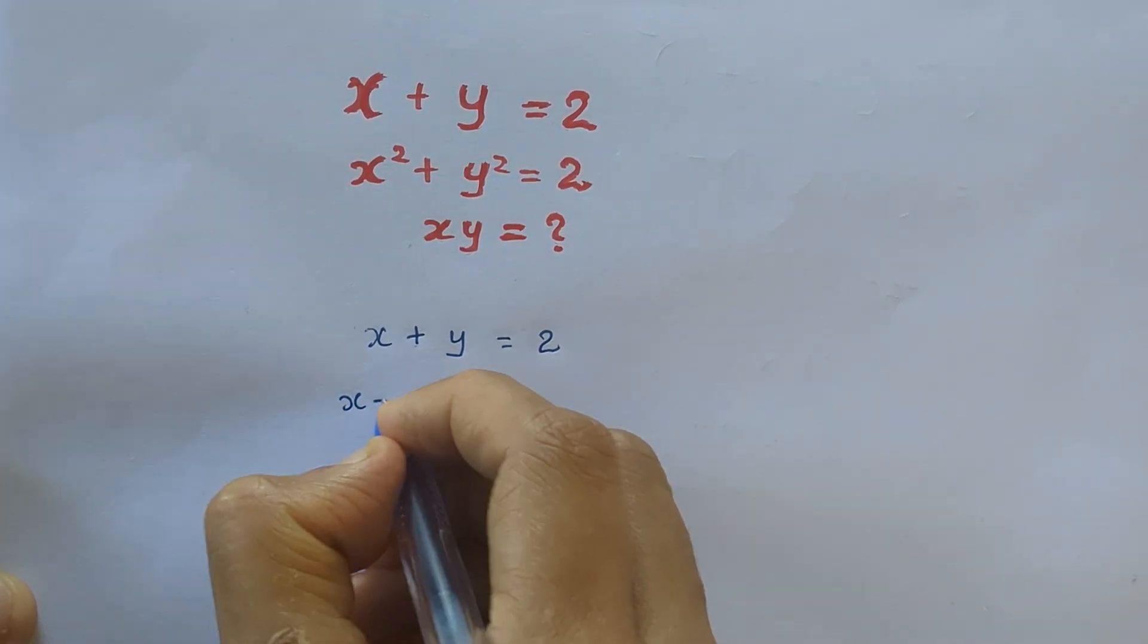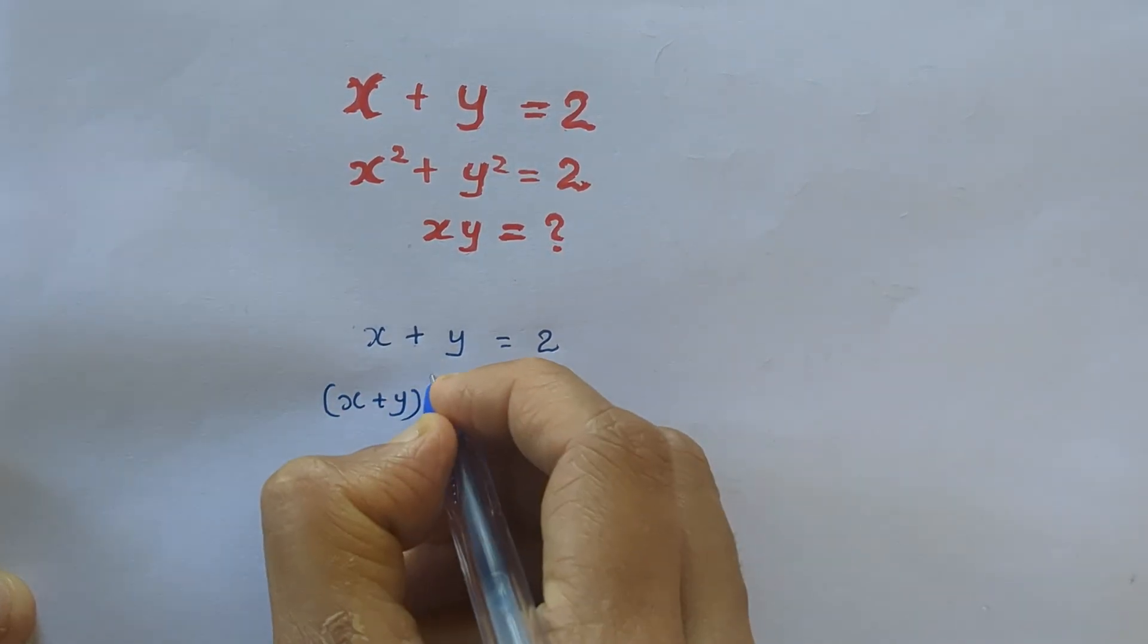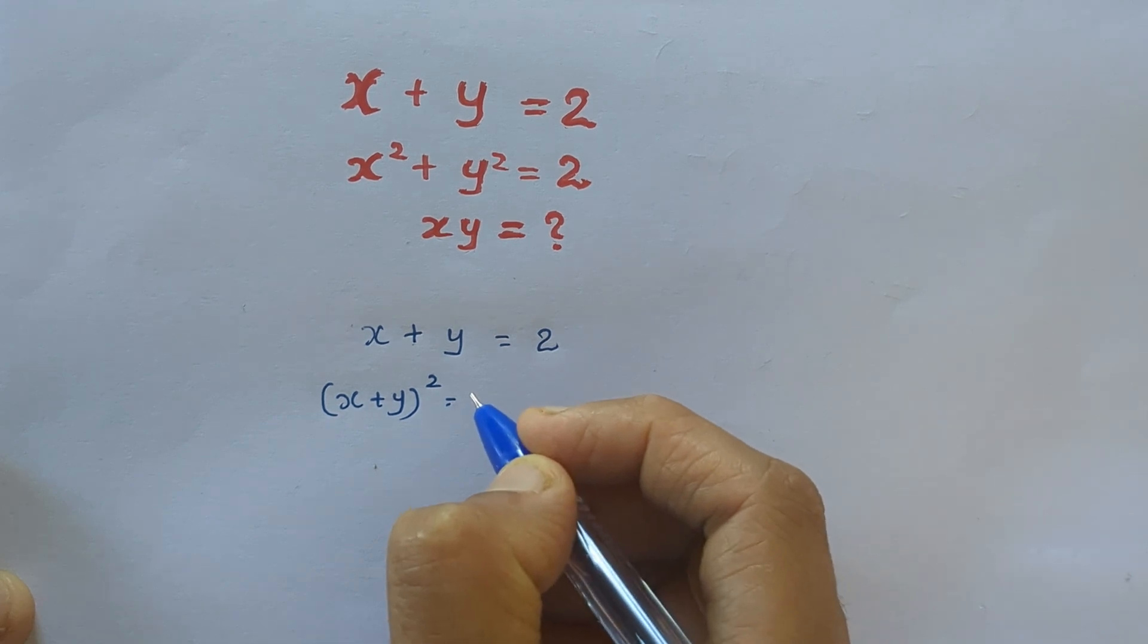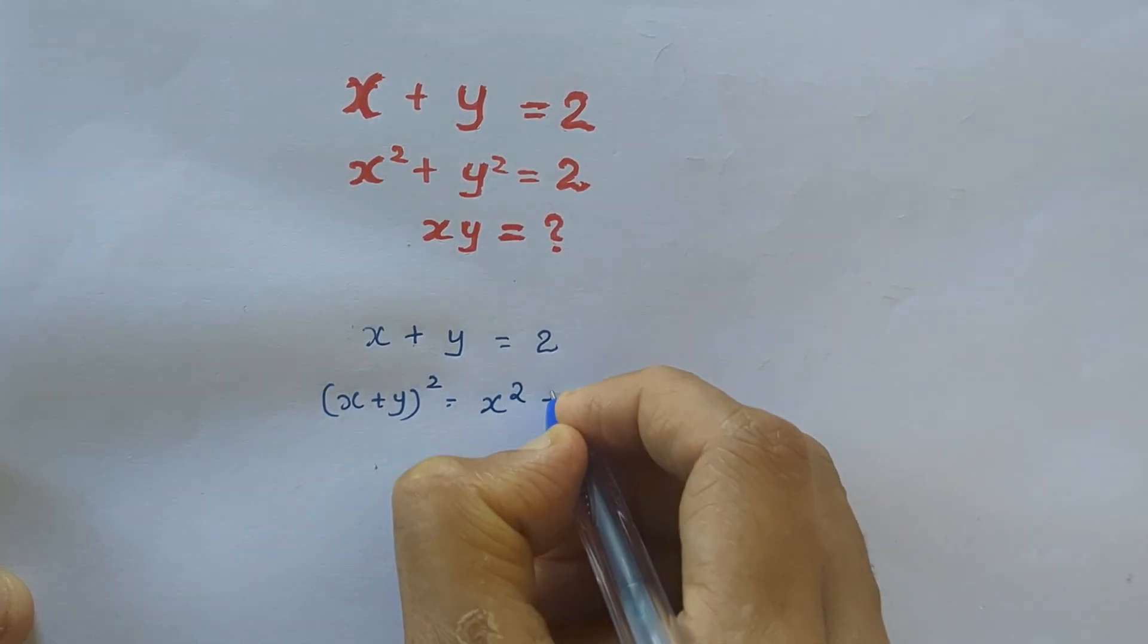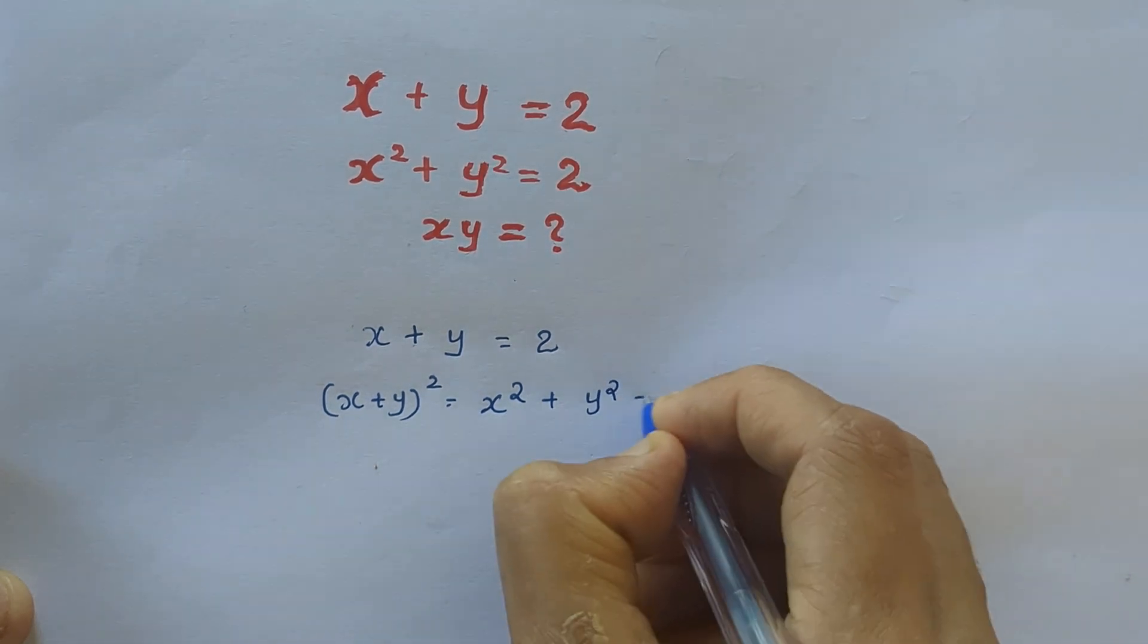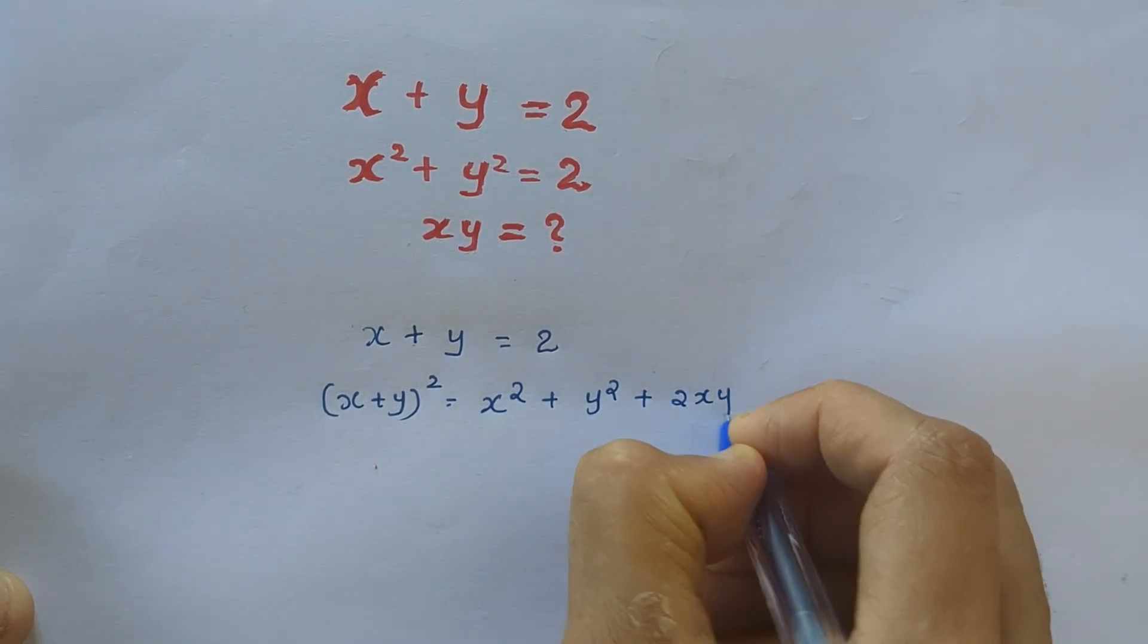So we have x plus y equal to 2. What is x plus y the whole square? We know the algebraic identity,